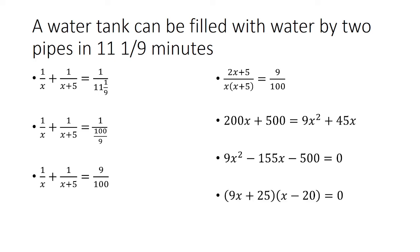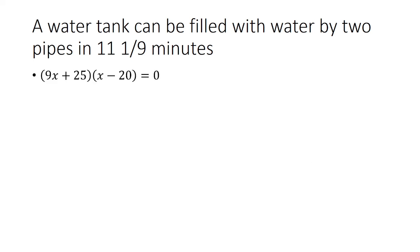Factoring this out, we get 9x plus 25 and x minus 20. We have to set both of those equal to 0 to get x is equal to 20 and negative 25 over 9.